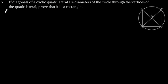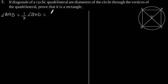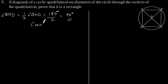Now, angle BAD is equal to half of angle BOD, which gives 180 degrees divided by 2, equal to 90 degrees. Here, we have considered that BD is a diameter.